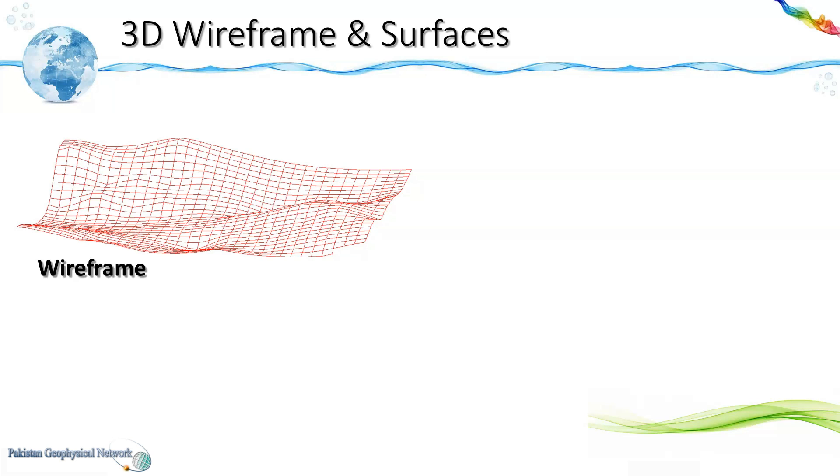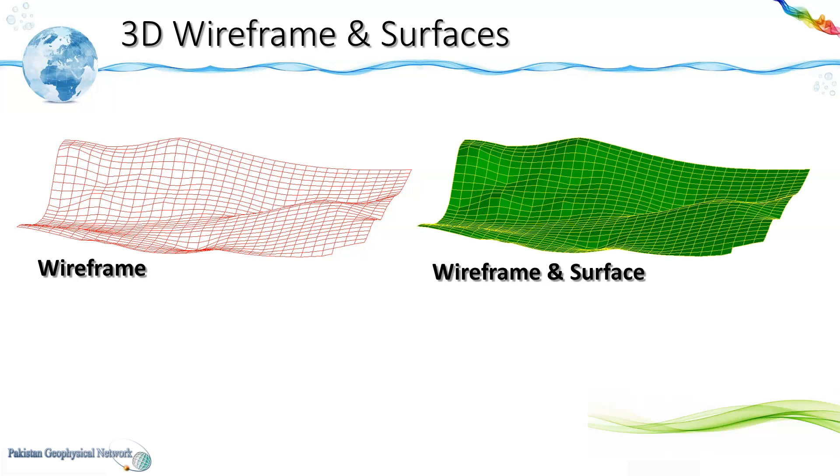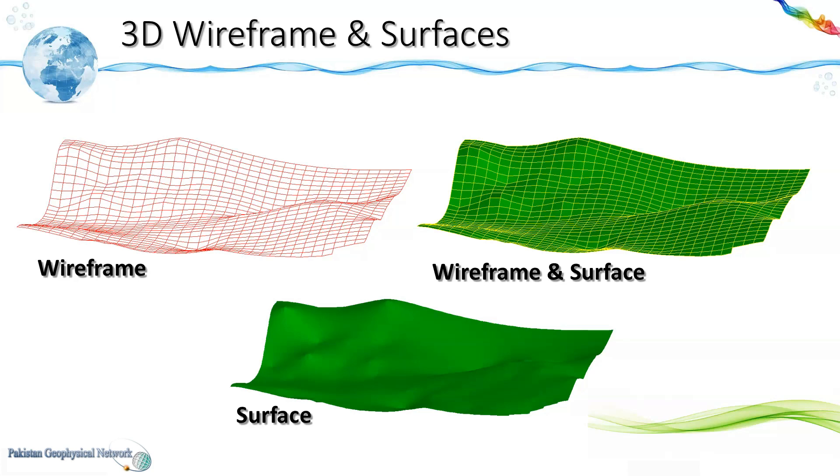And if you fill the grid with any color you would get a wireframe along with a rendered surface and if you remove the wireframe you would get a smooth surface. So we can see it gives a good representation in 3D.